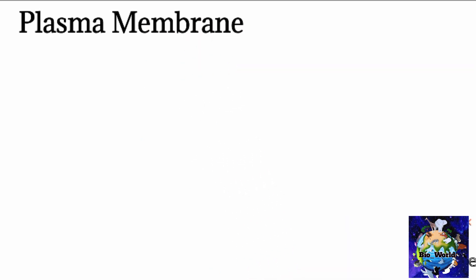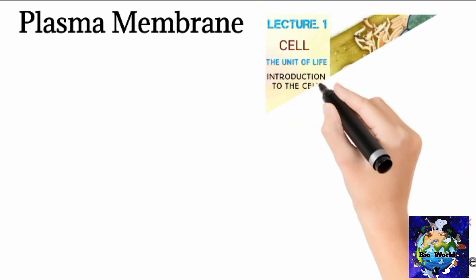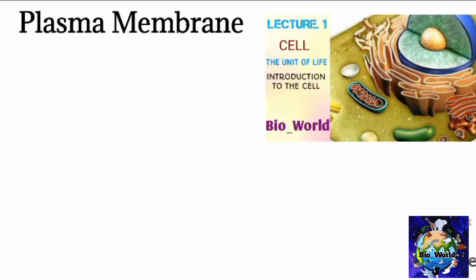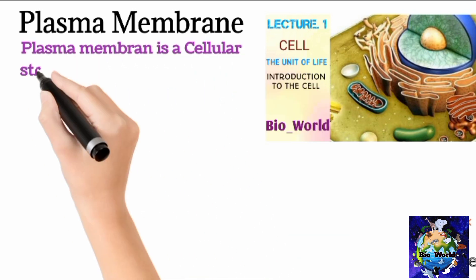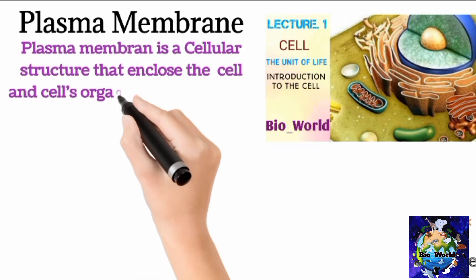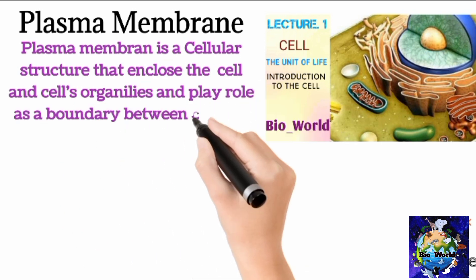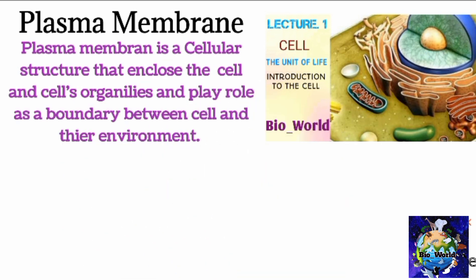If you are unaware of the cellular structures then see the previous lecture, introduction to the cell, link is given below in the description. Nevertheless, plasma membrane is a cellular structure that encloses the cell and cells organelles and plays a role as a boundary between cell and the environment.